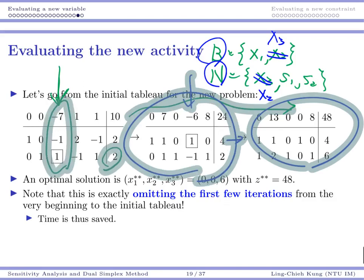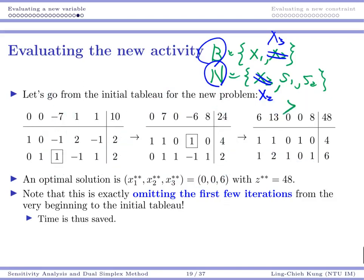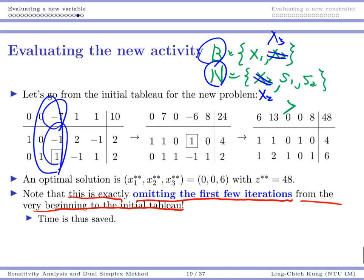So anyway, there is a very quick way to do the evaluation. All the remaining things, I just need to take a look at all the numbers in the new column, and then I know whether I should stop directly or whether I should move forwards. This is exactly omitting the first few iterations from the very beginning to the initial tableau, and I can save a lot of time. In this particular example, we just saved two iterations.